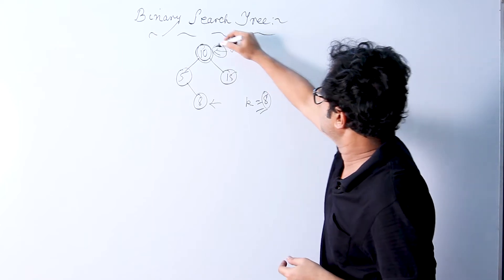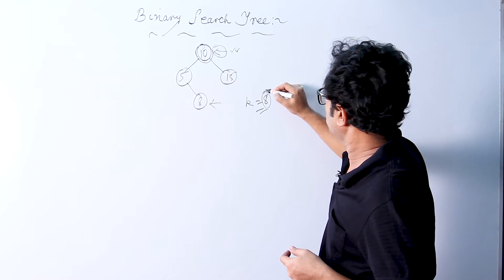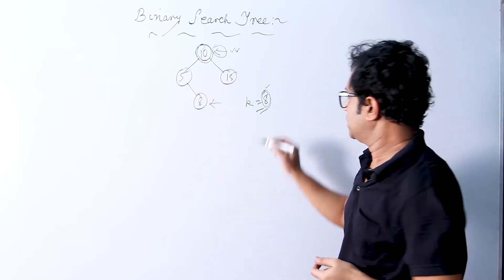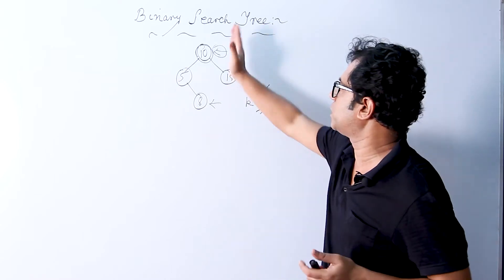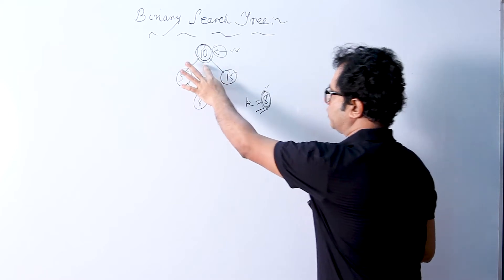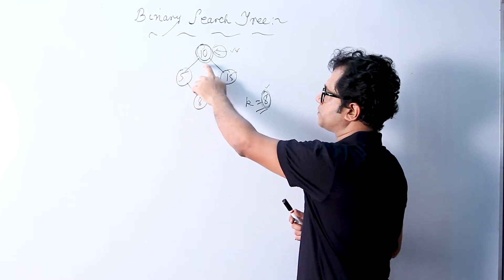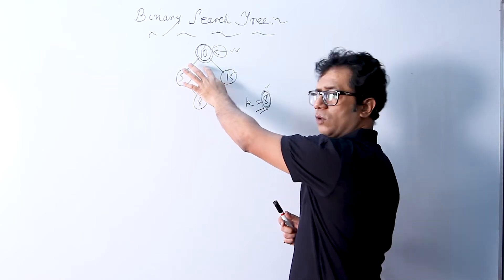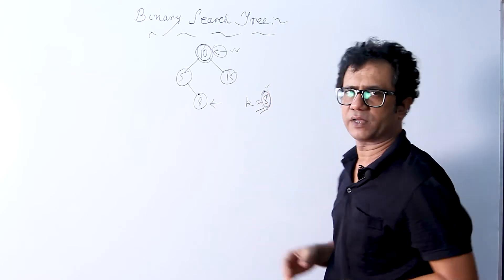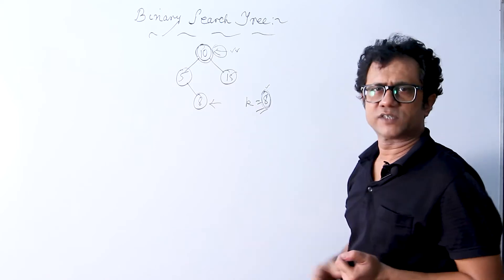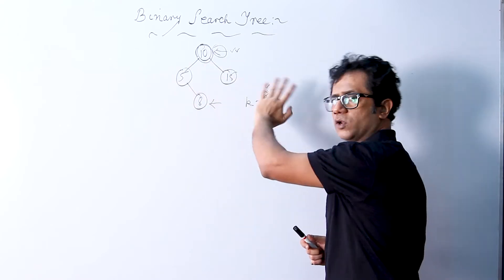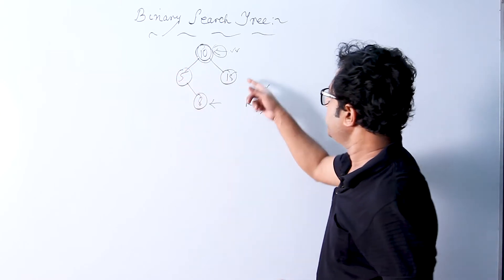If we see that 8 is not matching with 10, we will compare whether 8 is more than or less than the root node value. If the key value is less than the root node value, since this binary search tree is partitioned in a left-right manner, we will find 8 on the left subtree. Since 8 is less than 10, we will go to the left subtree and leave aside the right subtree, performing our search recursively.